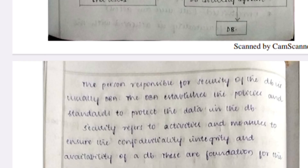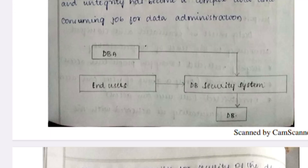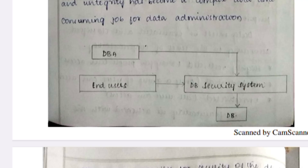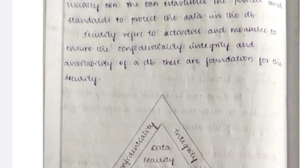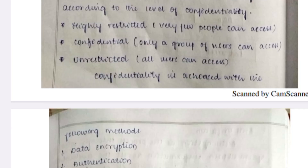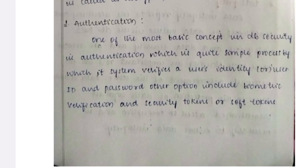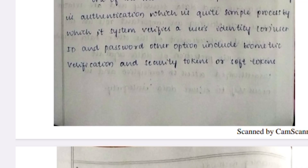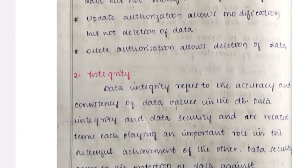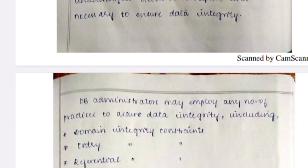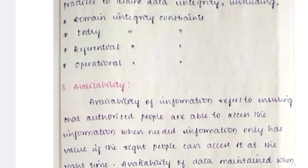Database security: there is a diagram showing database end users and the database security system — no one can directly access the database. You must draw the database recovery techniques diagram compulsorily. Authentication means verifying whether the user is a recognized person or not. Authorization checks whether the person is authorized. Integrity means data accuracy.